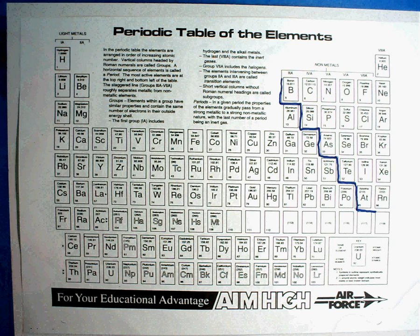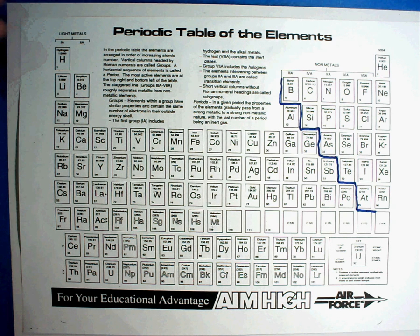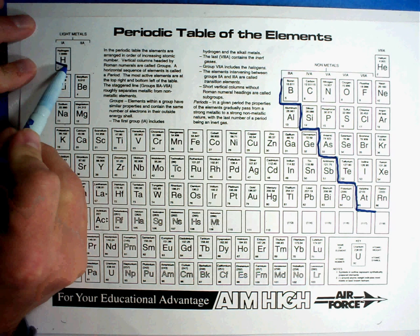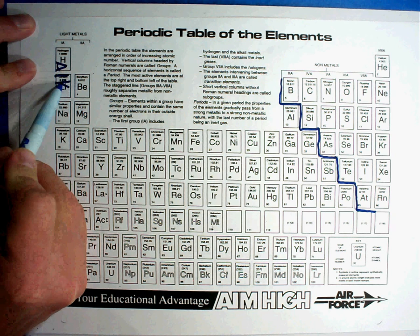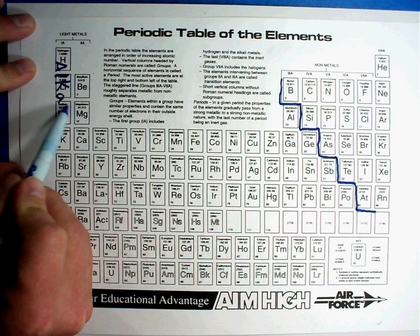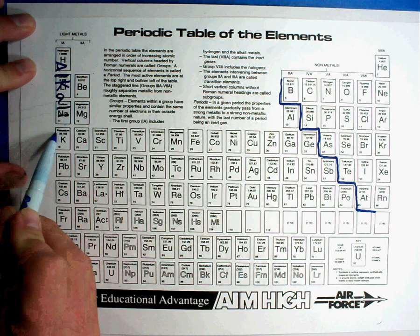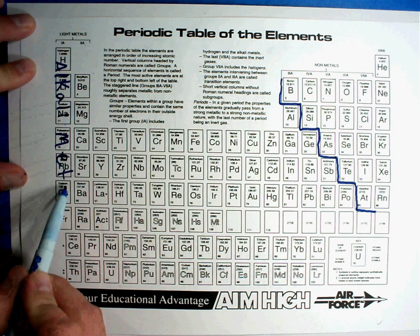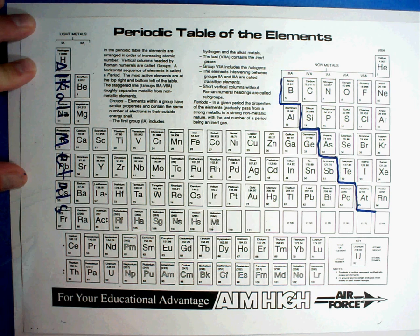We're going to start on the left hand side. Column number one on the periodic table are called the alkali, A-L-K-A-L-I metals. It goes all the way from the top to the bottom of the column, alkali metals.